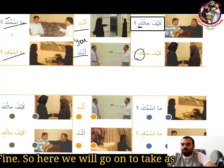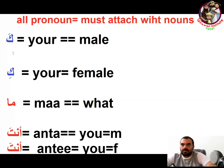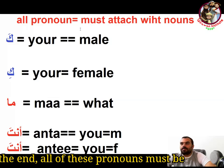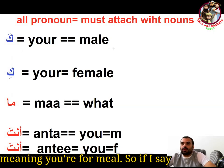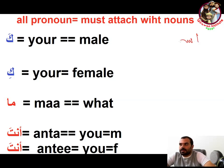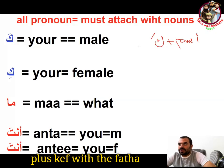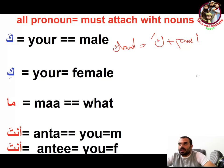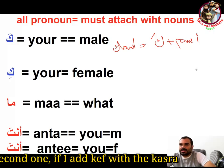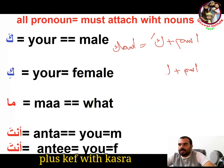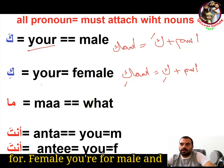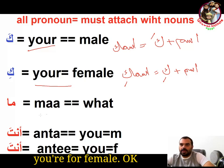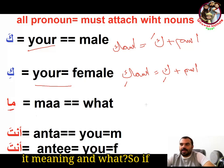If I add kaf at the end of a noun: all these pronouns must be attached with nouns only. If I add kaf with fatha, it means 'you' for male — so 'ism' plus kaf with fatha gives 'ismuka.' If I add kaf with kasra, it will be for female, giving 'ismuki' — meaning 'you' for male and 'you' for female respectively.